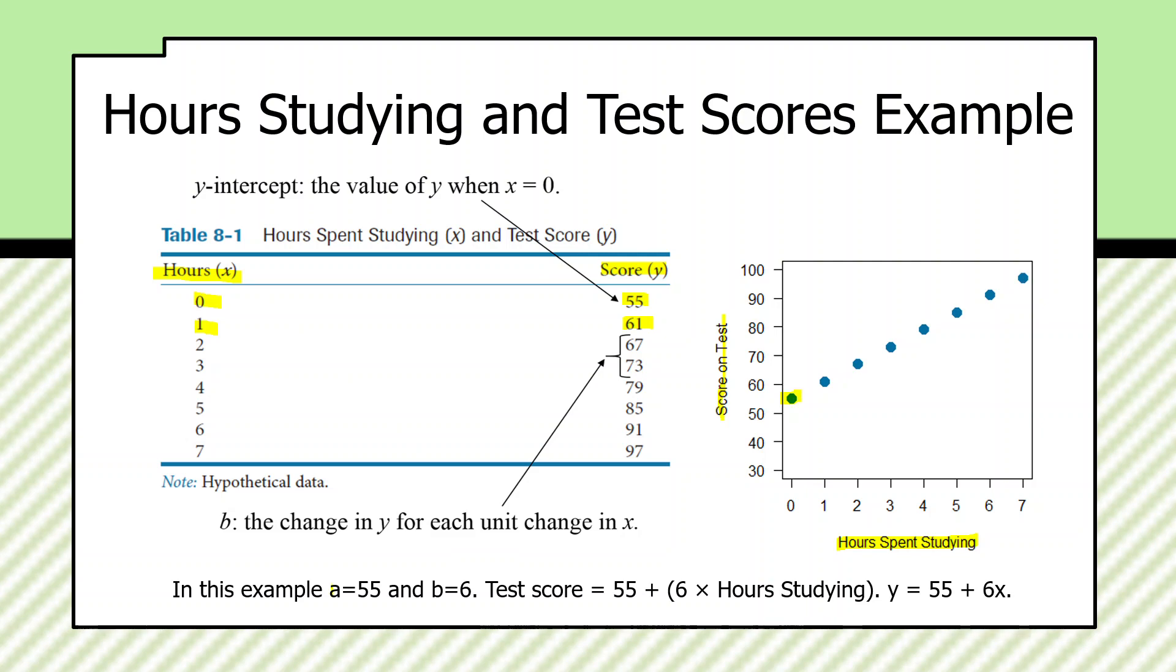So, the y-intercept will be 55, and the regression coefficient will be 6. The formula will be y, the score on the test, equals 55 plus 6 times x, which is hours spent studying.